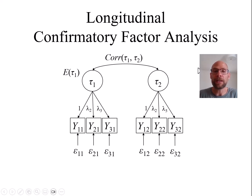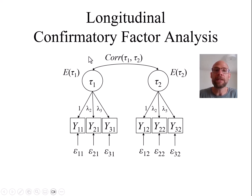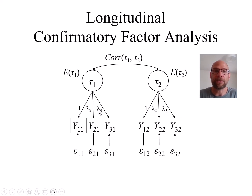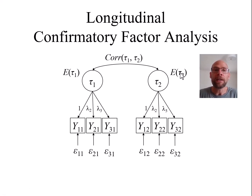Furthermore, we can also include latent means in our analysis. We can estimate the mean or expected value of tau one and tau two and compare those means across time. Before doing so, we want to make sure we have established a sufficient level of measurement equivalence across time with regard to factor loadings and intercepts, so that the means can be meaningfully compared. For example, we might be interested in knowing whether subjective well-being changes as a result of an intervention or event when we have longitudinal data.